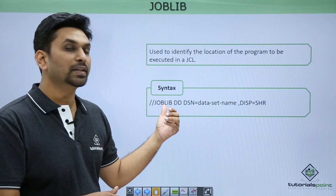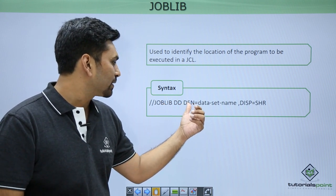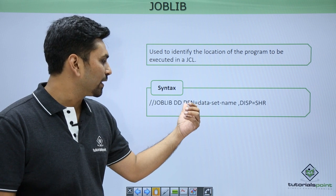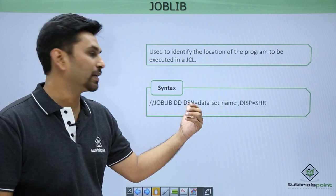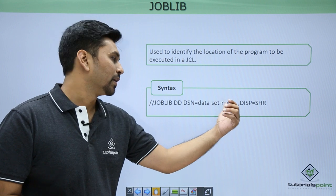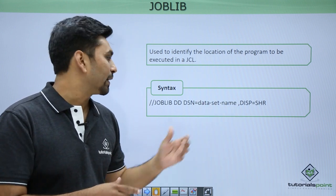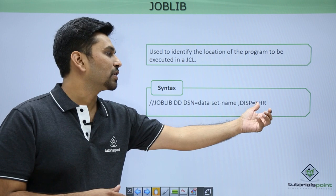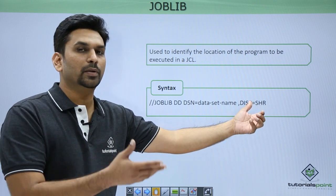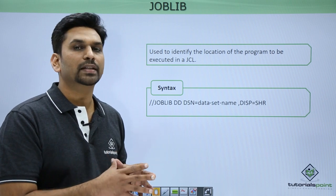The syntax is simple. You need to mention JOBLIB — this is the keyword. Then you need to mention the DD statement and DSN, which stands for data set name. You need to mention the data set where our loads are present. It is a PDS. Then disposition is share, which means open the PDS in share mode.